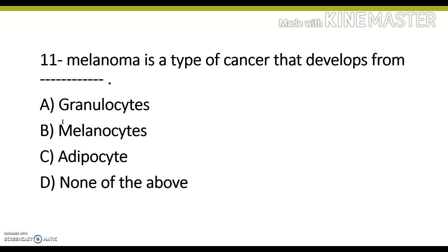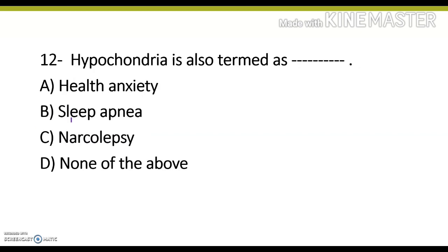Melanoma is a type of cancer that develops from granulocytes, melanocytes, adipocytes, or none of the above. Its correct answer is option B, melanocytes. Next question: Hypochondria is also termed as health anxiety, sleep apnea, narcolepsy, or none of the above. Its correct answer is option A, health anxiety.